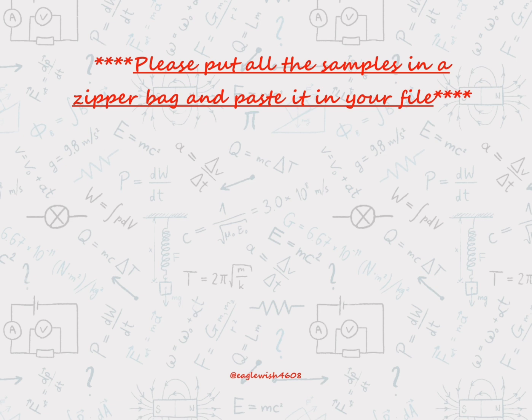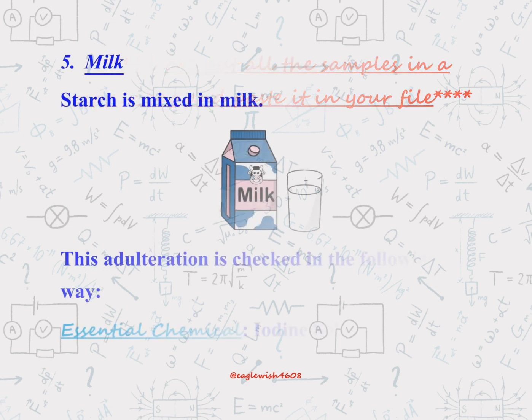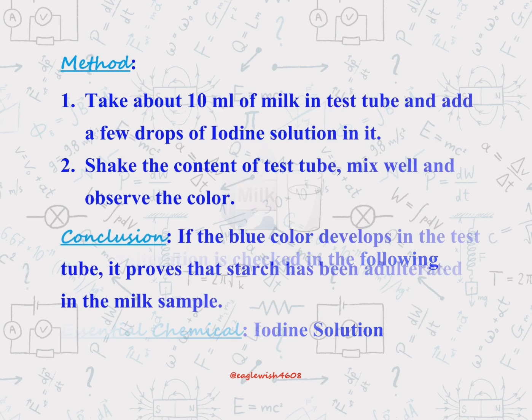Make sure to place all the samples in the Ziploc bag and paste it in your practical file. Milk is also a common target for adulteration, often with starch. We'll reveal the chemical procedure for testing milk and the necessary chemicals.